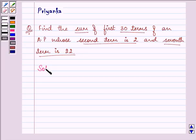So let us start with our solution. We are given that the second term of an AP, that we see as A₂, is given to us as 2 and the seventh term of an AP is given to us as 22.